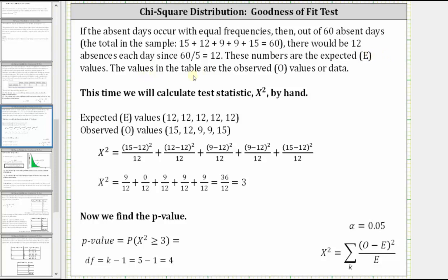The values in the table are the observed values, or the data, which is O. So now we have the information we need to calculate chi-square. Again, we have the expected values, and we have the observed values.